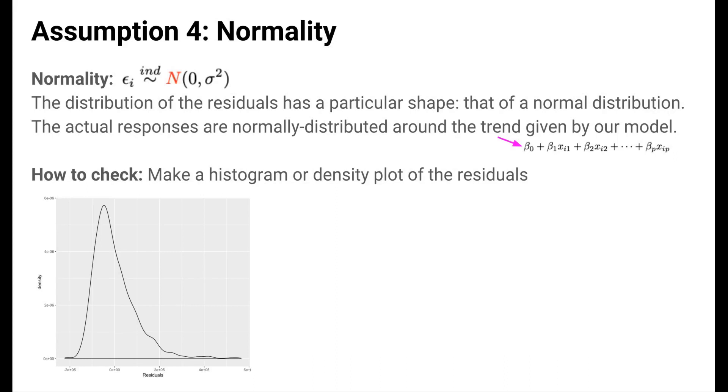Histograms and density plots are clear choices for this. We've made a density plot on the left. It's centered a bit to the left of zero and looks right skewed. This doesn't look normal. But what if it doesn't look as bad? Is there a better way than this rough eyeballing of the shape?